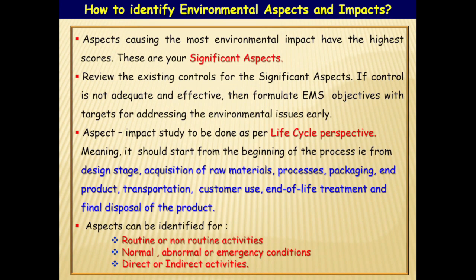Based on the scores using the matrix, aspects are divided into non-significant aspects and significant impacts. Aspects causing severe impact on the environment have the highest scores — these are termed as significant aspects. To address the significant aspects: review the existing controls provided for them. If controls are not adequate and effective, try to make them effective. If not possible, then formulate EMS objectives with time-bound targets for addressing the environment issues. This is how all significant aspects are to be addressed and contained.